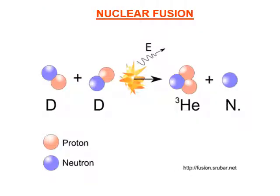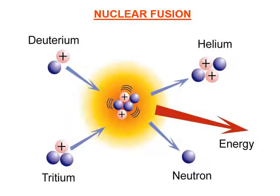In nuclear fusion, two smaller nuclei combine to form a larger nucleus along with a large amount of energy and the production of a neutron. For example, deuterium combines with tritium in nuclear fusion, forming helium and releasing a neutron along with a large amount of energy.